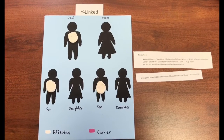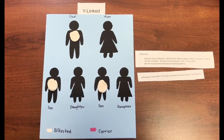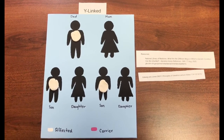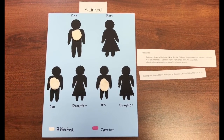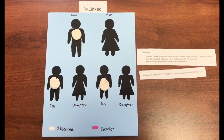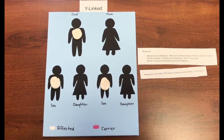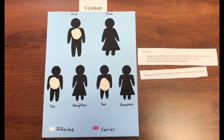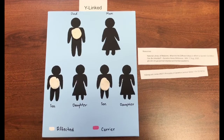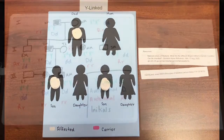Lastly, with Y-linked inheritance, only the males are affected, and it does not skip generations. An example is Y-chromosome infertility. Here, the father is affected, so both of his sons will be affected.